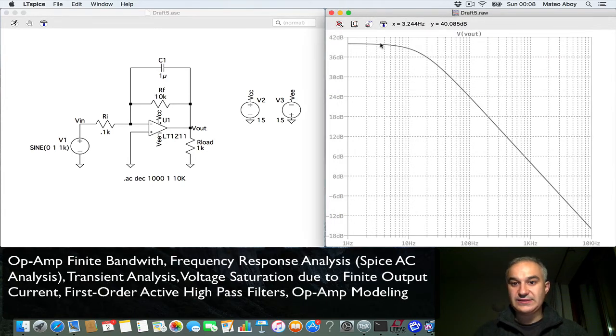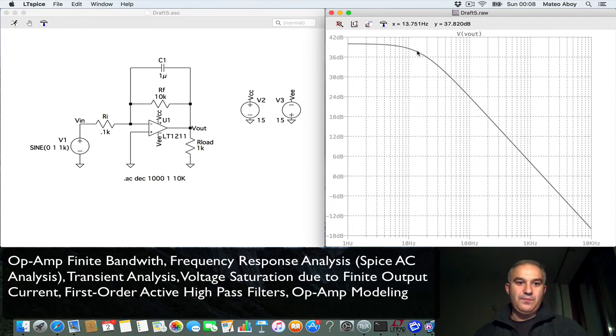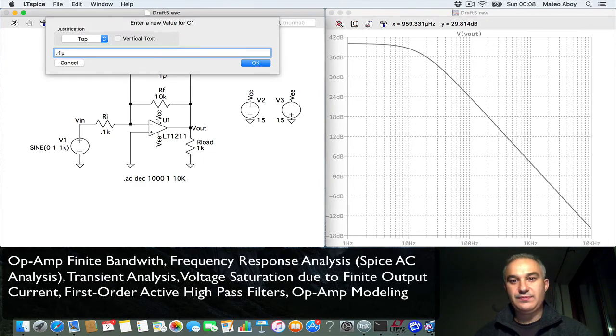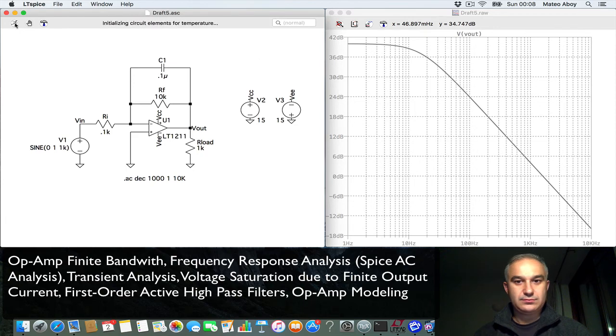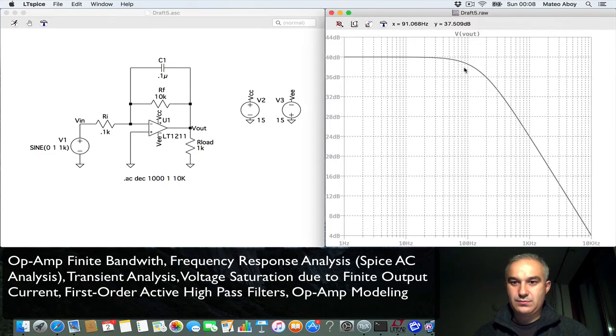So we could look at 3 dB around here, which is around 13.75 Hz. Now, we could make this smaller, right, increase the passband. Now we are at 40 dBs. 162 Hz approximately, the filter that we have created in terms of the passband.